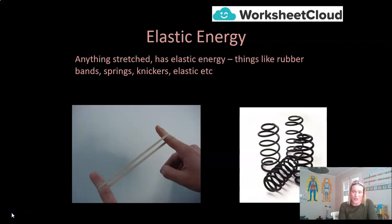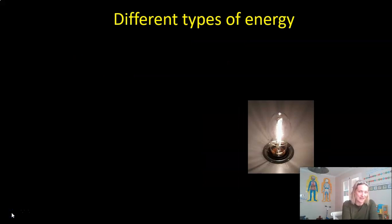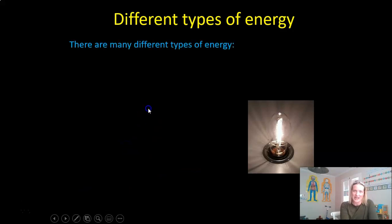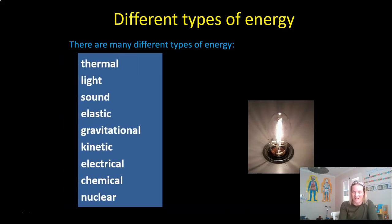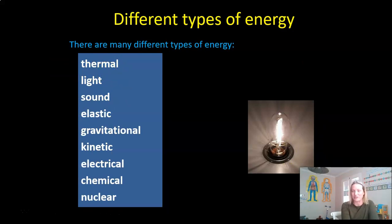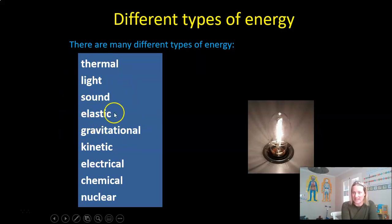So now we have covered all nine different types of energy. Let's see what you can remember. Can you pause your video right now and go through all nine forms of energy in your head? Here they are: thermal — remember, that's the scientific word for heat, totally acceptable to use heat if you prefer — light, sound, elastic, gravitational potential, kinetic, electrical, chemical — remember, chemical means stored energy — and nuclear.